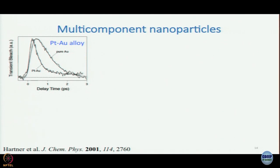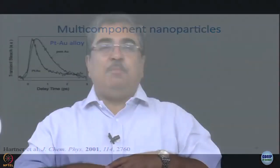Let us move to multi-component nanoparticles. One of the things time constants depend on is composition. Here we start talking about platinum-gold alloy nanoparticles. You can think of two extreme situations: an alloy where the composition is homogeneous throughout — for example, 5% platinum and 95% gold everywhere — or a core-shell structure where you might have a gold core and a platinum shell. Both are useful in different ways.